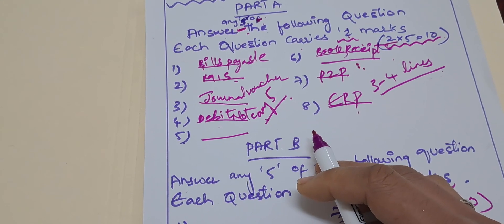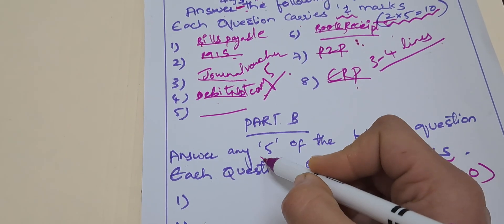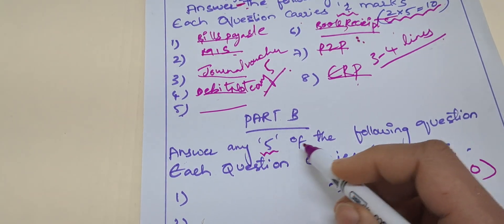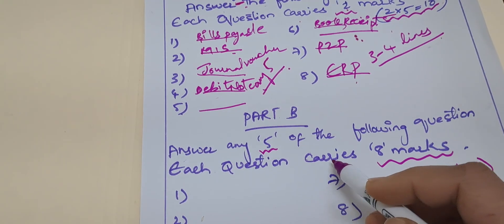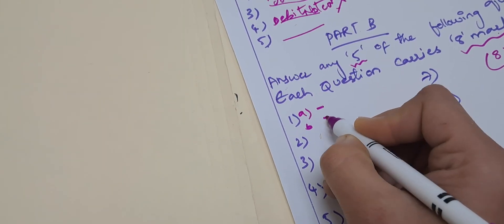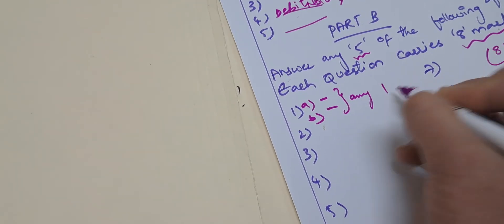In Part B, you again have to answer any five of eight questions. Each question in Part B carries eight marks. In Part B there is an internal choice — option A and option B are given for each question, so you have to attend any one.